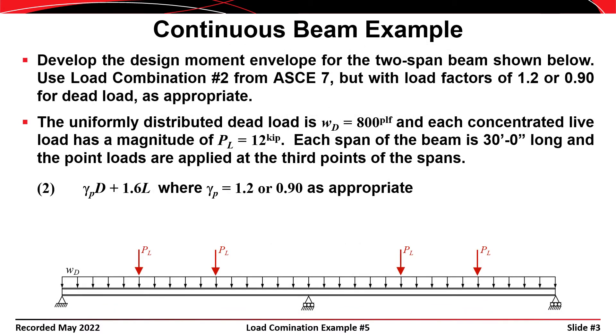For this problem, we are asked to consider a two-span continuous beam subjected to dead load and live loads. The dead load consists of a uniformly distributed load with a magnitude of 800 pounds per linear foot, and the live loads consist of four point loads applied at the third points of each span, each with a magnitude of 12 kips.